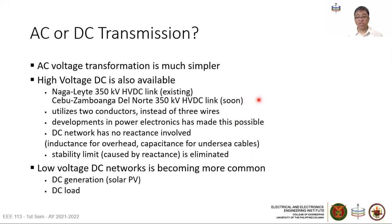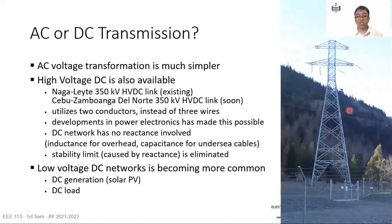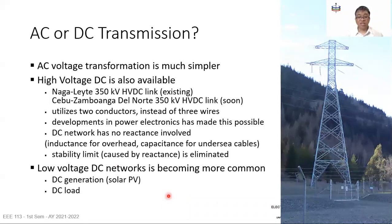Instead of three conductors, HVDC only needs two conductors. Reactance is eliminated and some stability issues are eliminated as well. Towers for high voltage DC look different — they don't have a set of three wires but just a pair of wires, with the others being pilot and communication wires. Low voltage DC networks are also becoming more common because DC generation such as solar PV, and DC loads for electronics and equipment, are much more common these days.